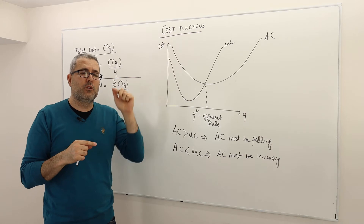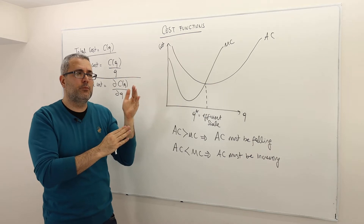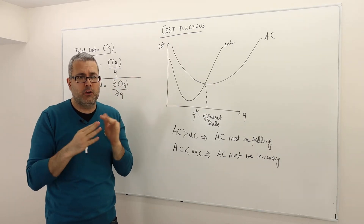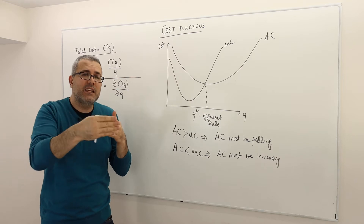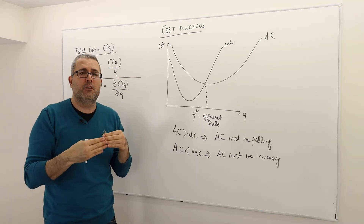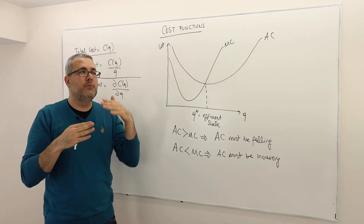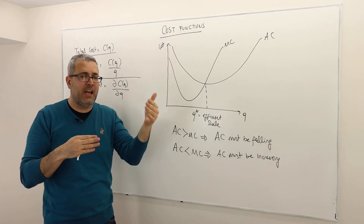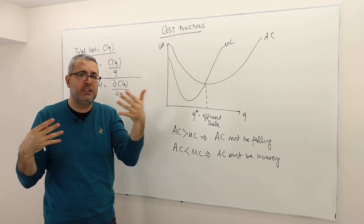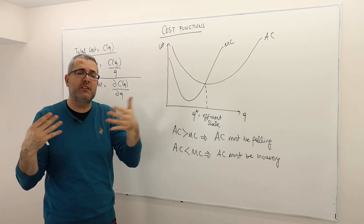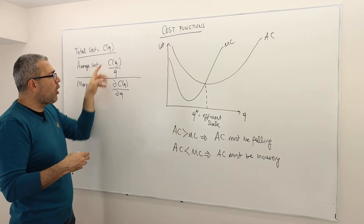For the marginal cost of the first output, consider two scenarios: on one side I produce one output, on the other I produce no output — the difference between these two cost levels gives me the marginal cost of producing the first output. For the marginal cost of the 10th output, look at the scenario where I'm producing 10 outputs versus 9 outputs. The difference between those two costs gives me the marginal cost of the 10th output. And they're almost always different.